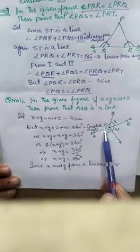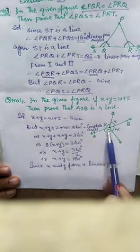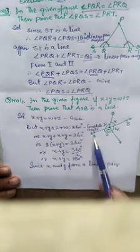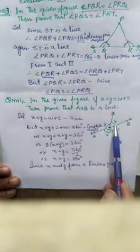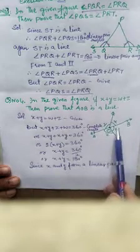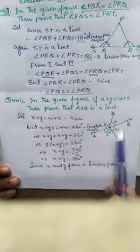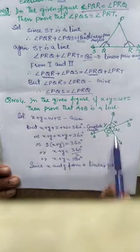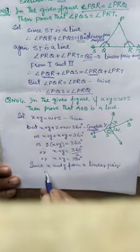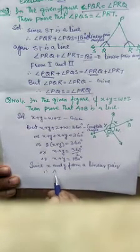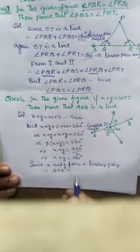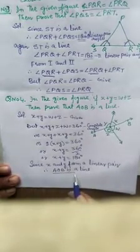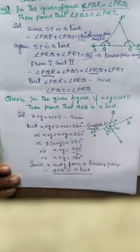Since x and y form a linear pair with sum equal to 180 degrees, therefore AOB is a line. This completes the proof.